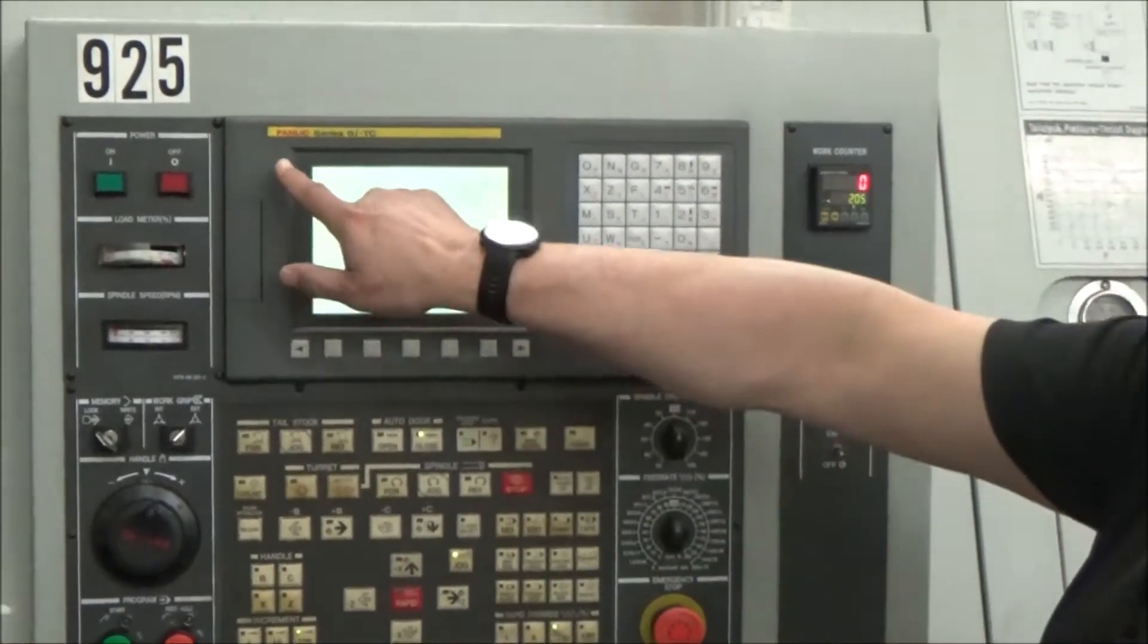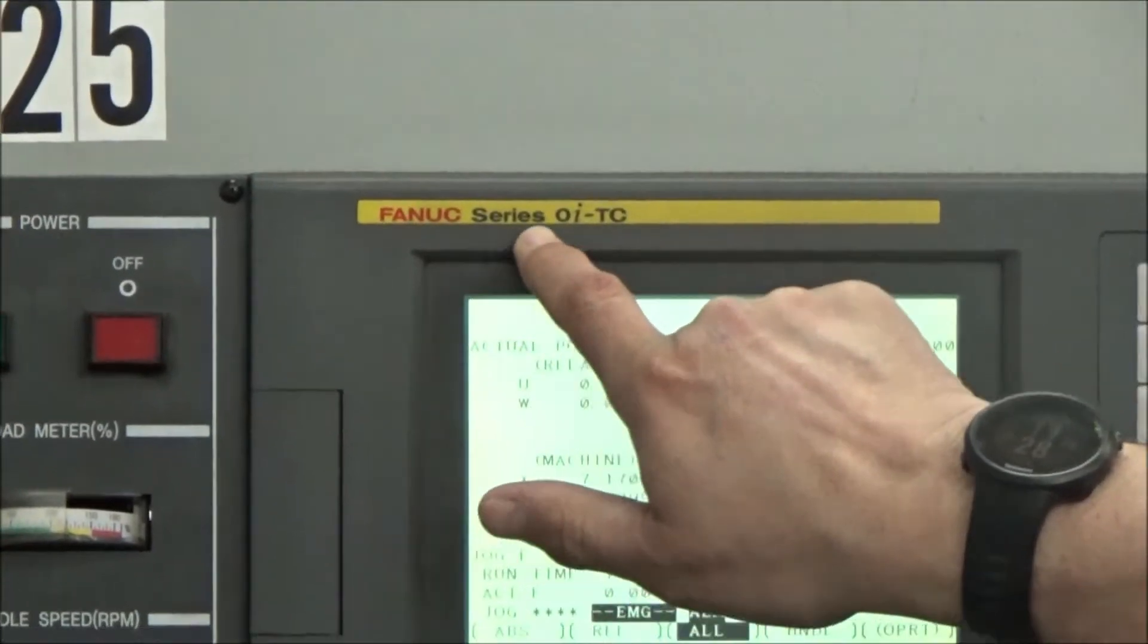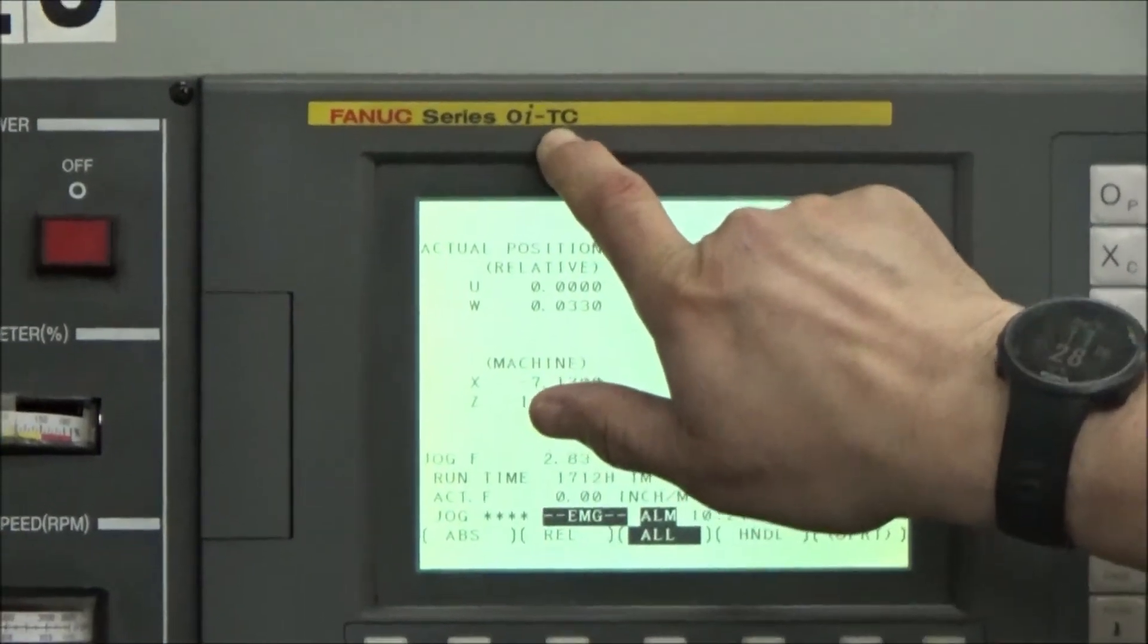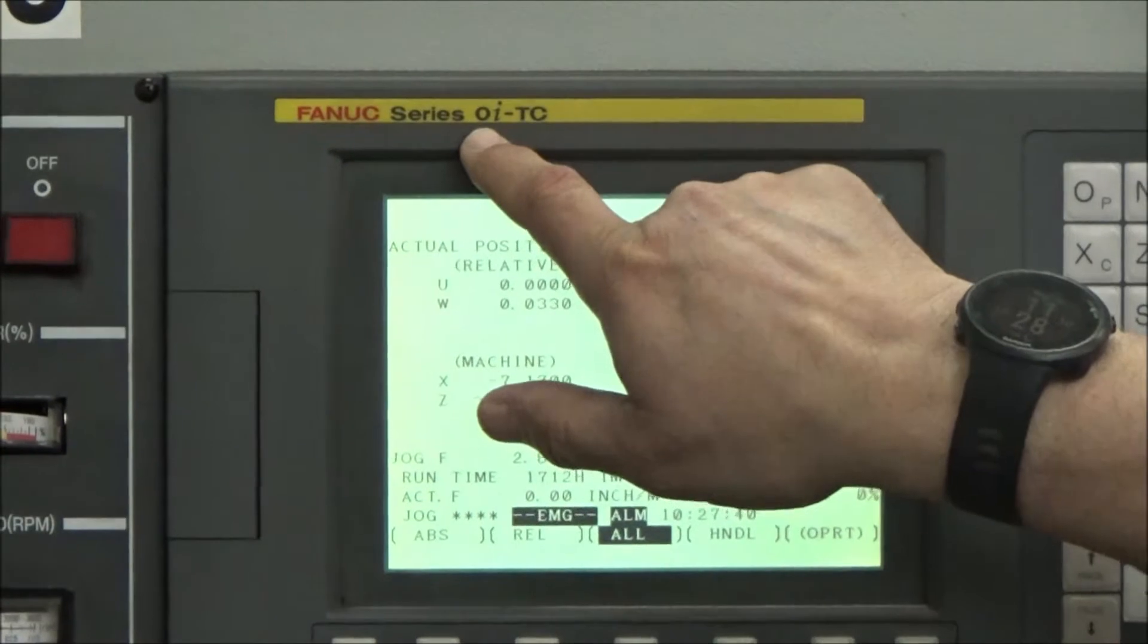Right now we're looking at a FANUC series 0i TC, right up here, FANUC series 0i TC. The T stands for turning, if it was a milling machine it would be an M, and the series is a 0i.